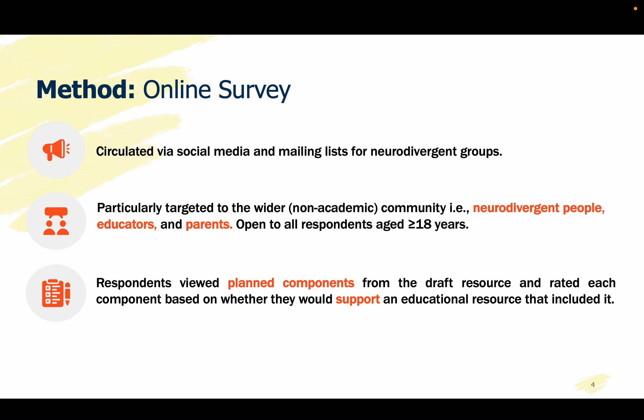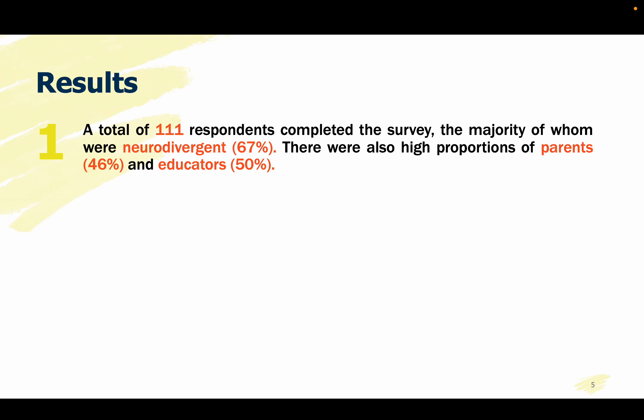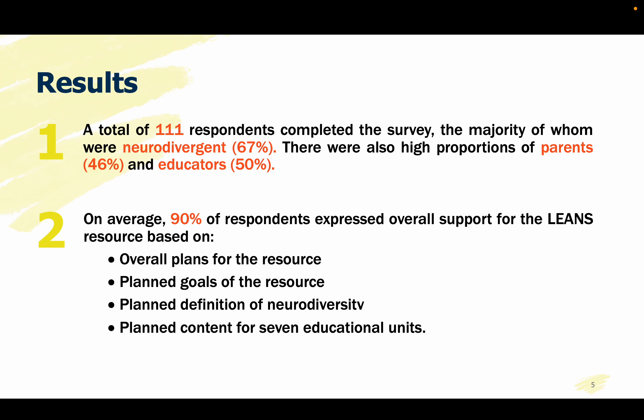In the survey, respondents viewed planned components from the draft resource and rated each component separately based on whether they would support an educational resource that included it. A total of 111 respondents completed our survey, the majority of whom were neurodivergent, with also high proportions of parents and educators. We found that, on average, 90% of respondents expressed support for the LEANS resource based on the overall plans for the resource, the planned resource goals, the planned neurodiversity definition, as well as planned content for seven educational units.